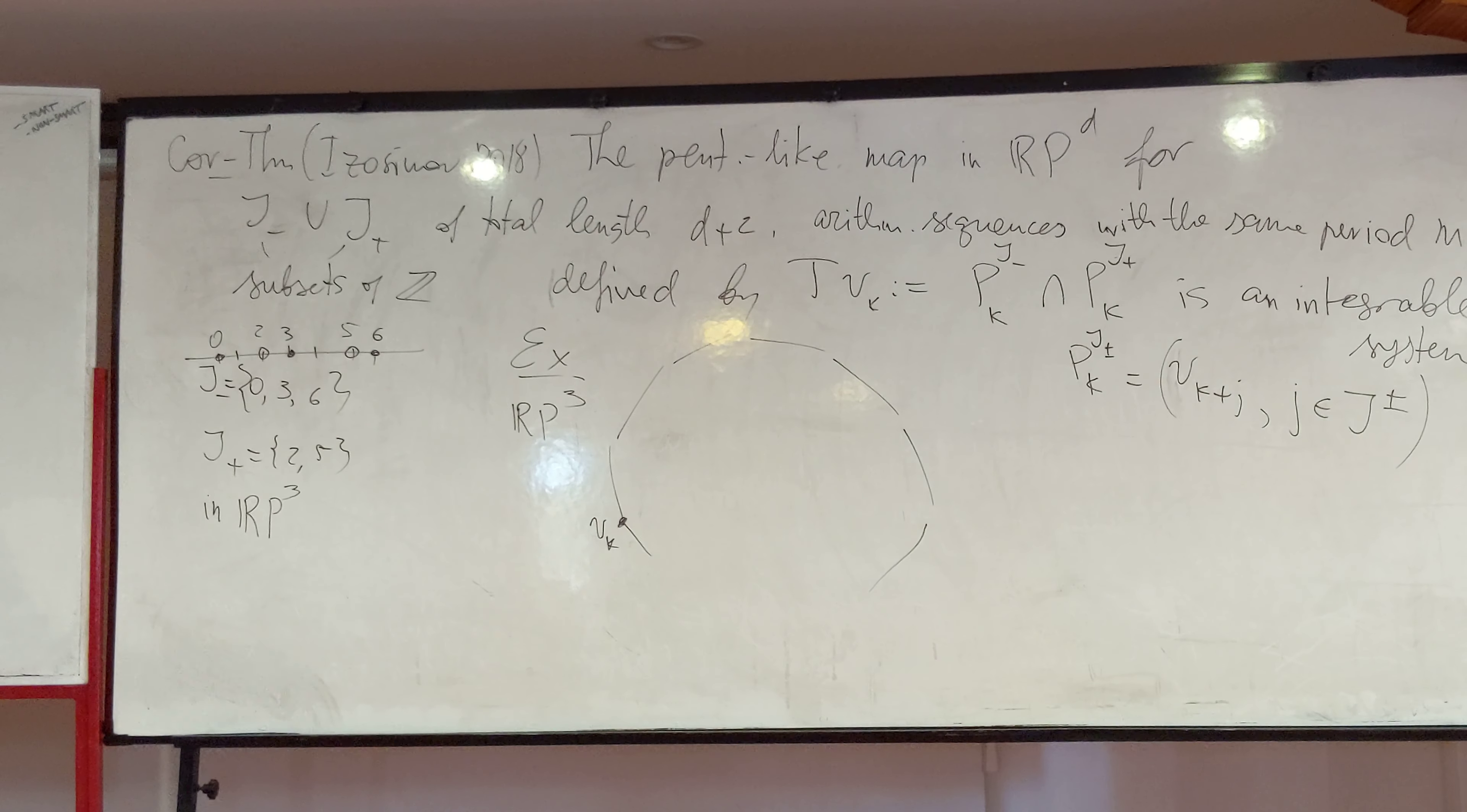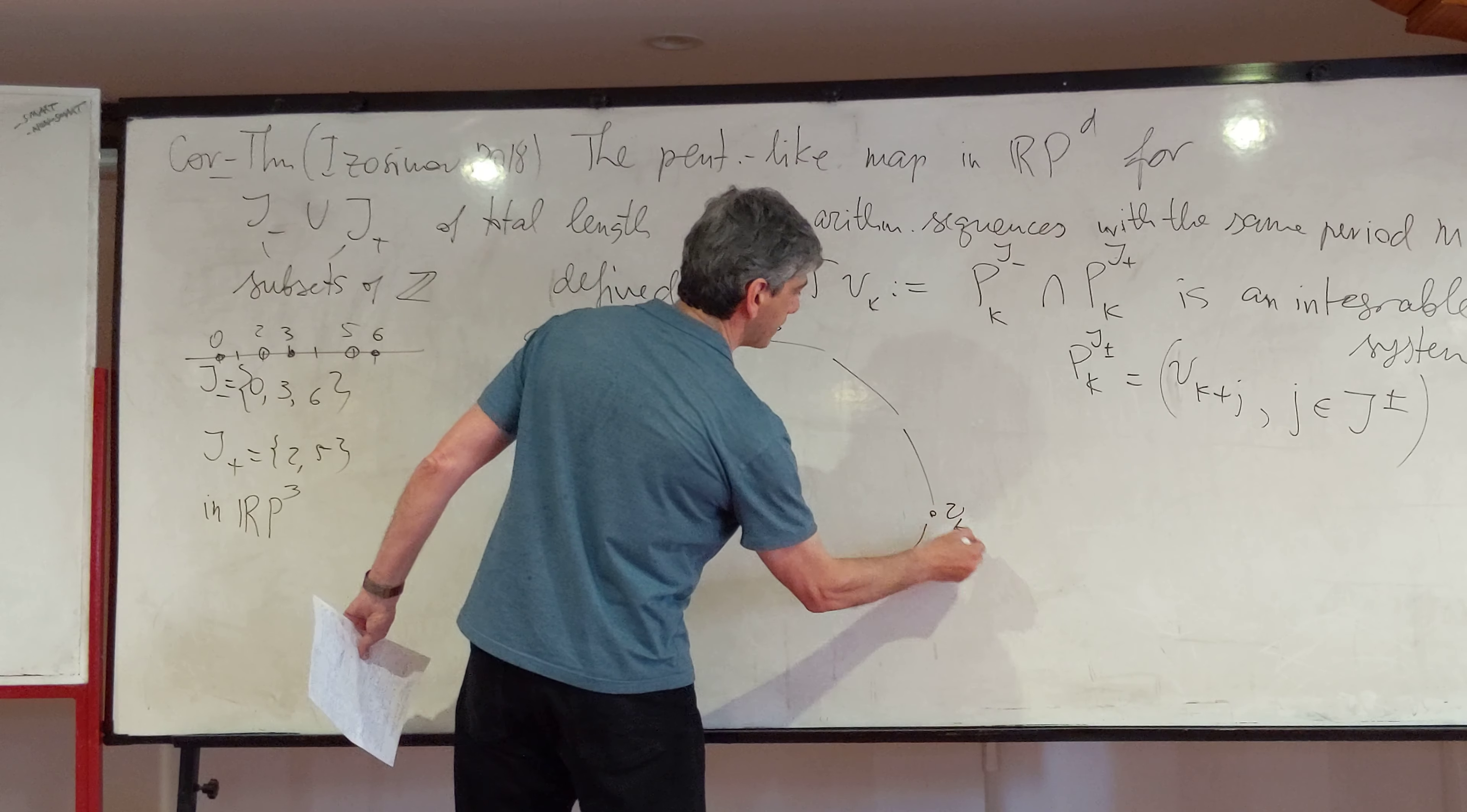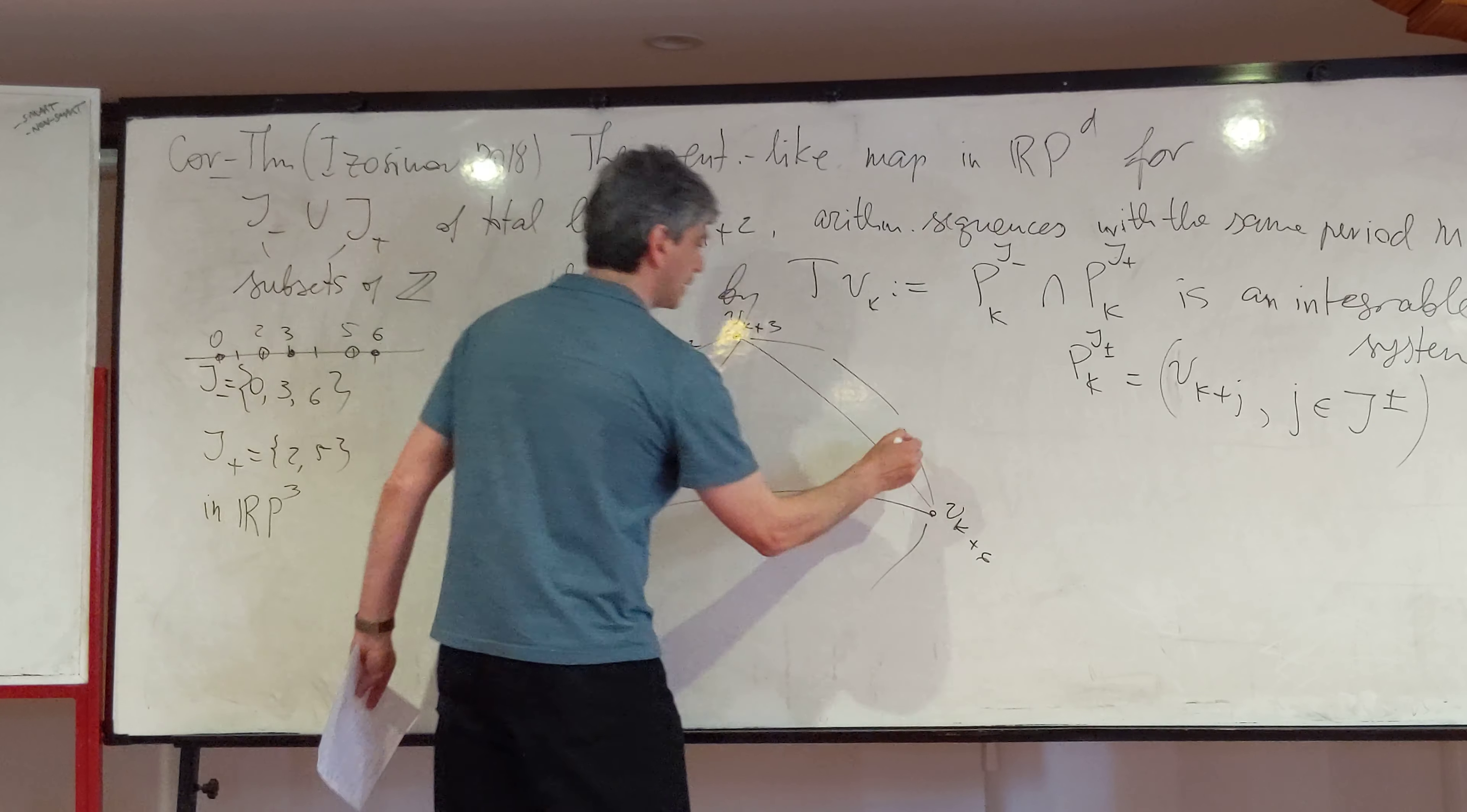Is it plane? Now, it's not necessarily a plane. So if I take J-minus, it will be generated by three points. This will be vk, vk plus 3, and vk plus 6. And this one is generated by two vertices only, vk plus 2 and vk plus 5.